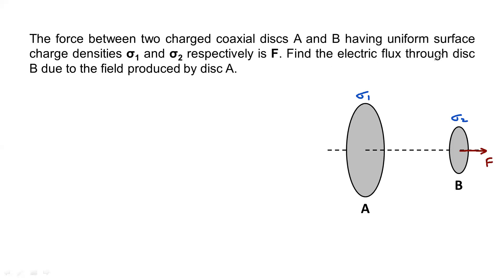Find the electric flux through disk B due to the field produced by A. Not the net flux. Due to A, what field will be there and what will be its flux? Let me take a small element like this on disk B.